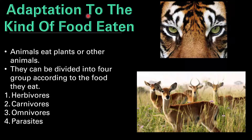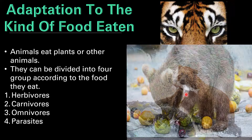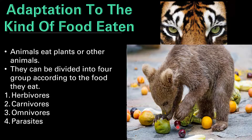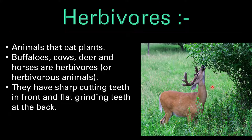Now let's talk about adaptations to the kind of food eaten by animals. Animals eat plants or other animals and can be divided into four groups according to the food they eat. First is herbivores — animals which eat only plants. Second is carnivores — animals that eat other animals. Third is omnivores — animals that can eat both plants and animals. Fourth is parasites — insects or small animals that sit on or live on other animals' bodies.